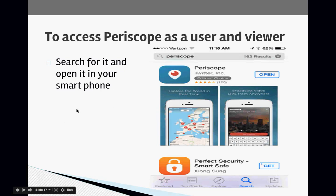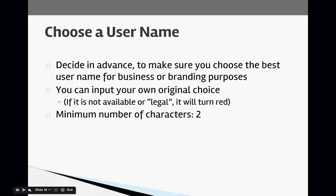For any smartphone, search for the Periscope app, open it up, and download it to your device. It will ask whether you want to access it with your Twitter account or with just your phone number — I would use your Twitter account. Choose a username in advance to make sure you choose the best one for your business or branding purposes. If the username is not available, it will turn red. The minimum number of characters is two.